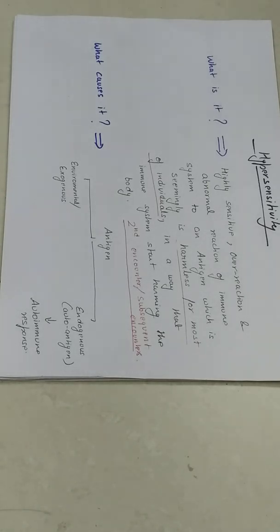Our immune system is designed to protect us from harmful pathogens. It is its first duty to protect us, to safeguard us. But in some cases, in some individuals, immune systems start giving highly sensitive, overrated, abnormal immune response towards an antigen which is seemingly harmless.